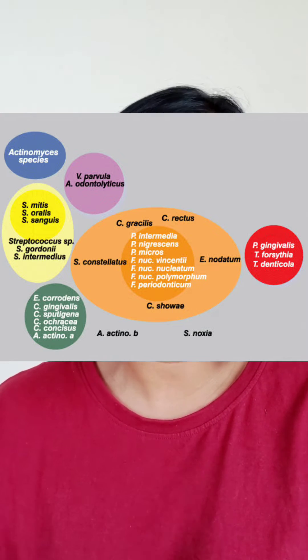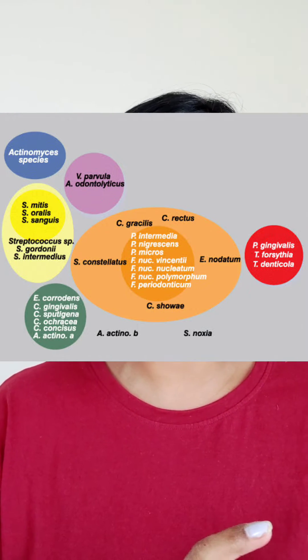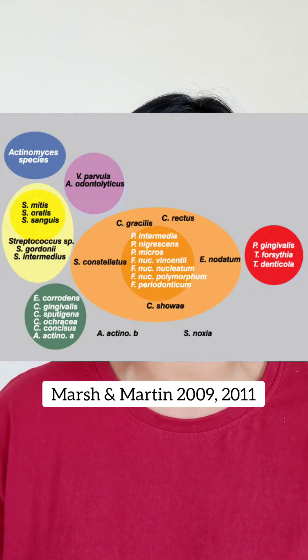For example, the bacteria in the red complex have very similar features. All of these groups or complexes are also in an increasing order of the degree of harm they cause.